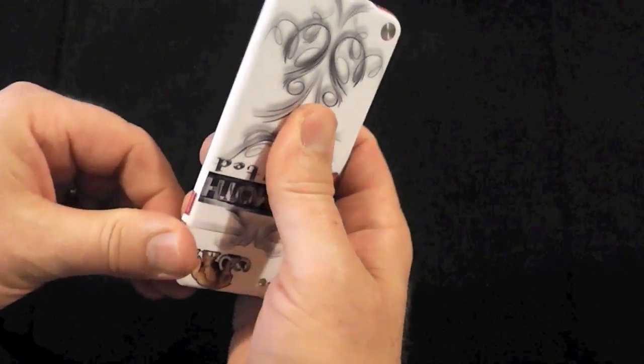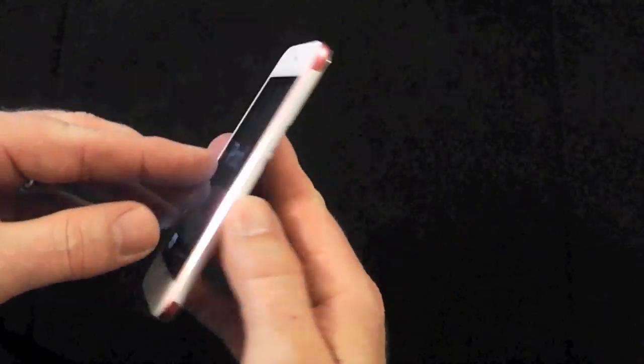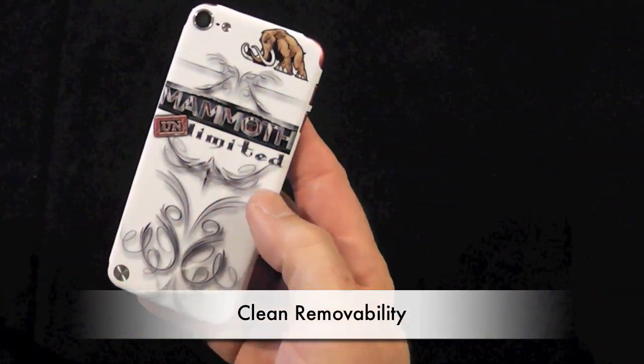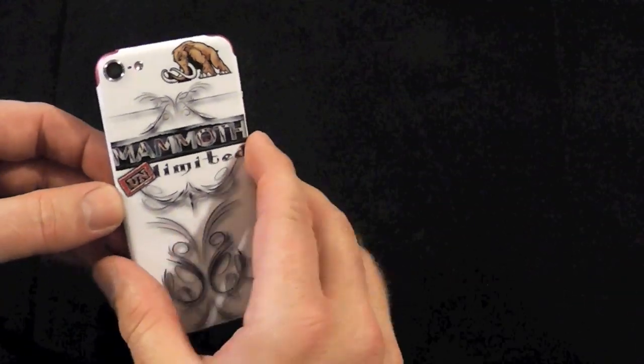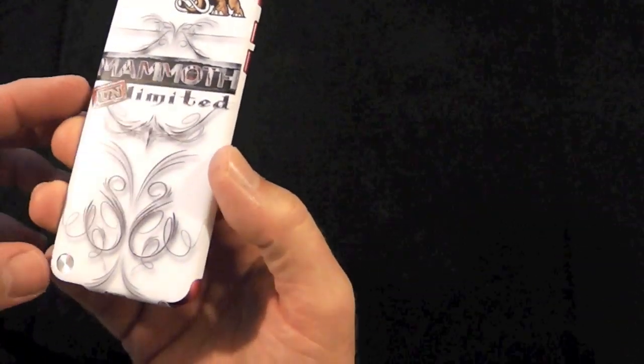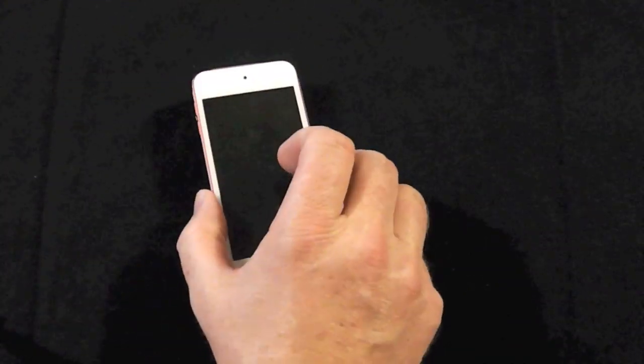And again, this is 3M material. I mean at any point in time, it's got a residue free removal. So if you ever want to remove the skin from the device, I mean you just pull it right off and it leaves a clean, it leaves your device clean and ready to go. Now there's the back.